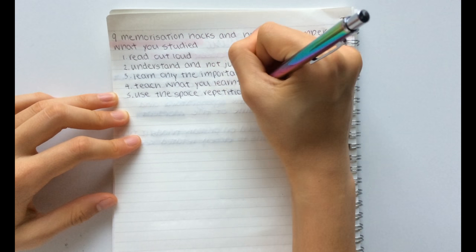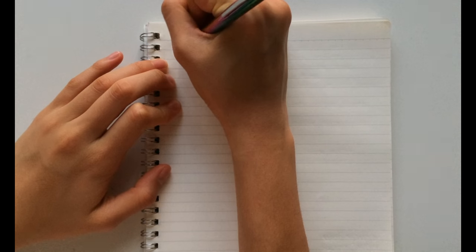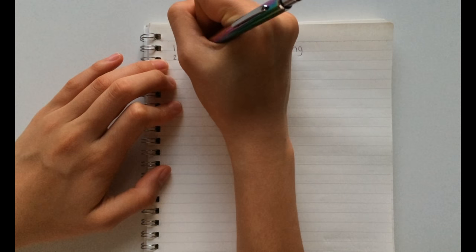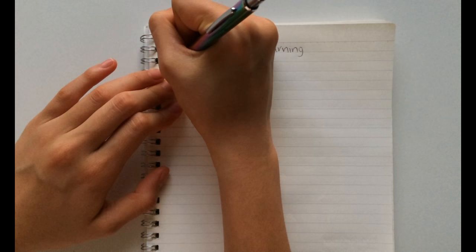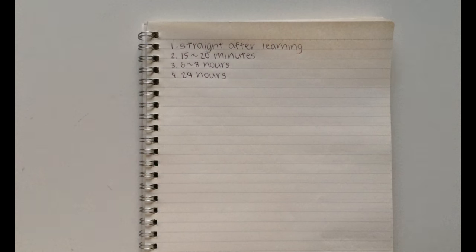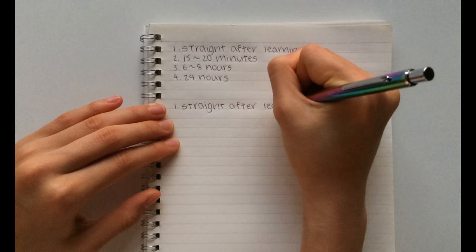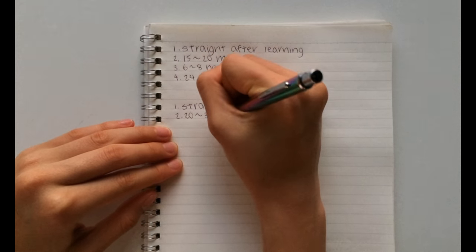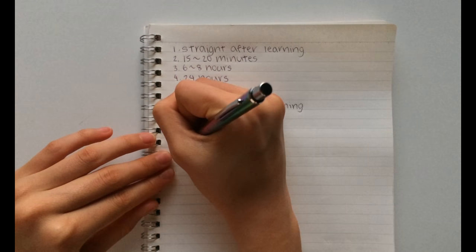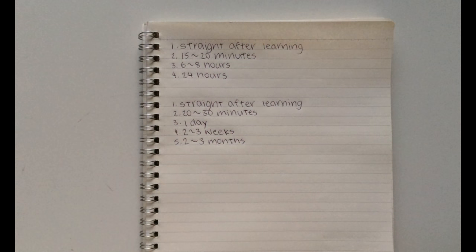The fifth hack is to use the spaced repetition method. If you want to remember something quickly, go back to the information right after learning, then 15 to 20 minutes later, 6 to 8 hours later, and finally 24 hours later. But if you want to remember something for long term, go back to the information right after learning, then 20 to 30 minutes later, a day later, then 2 to 3 weeks later, and finally 2 to 3 months later.